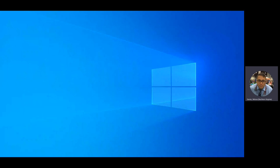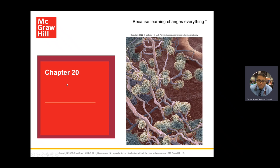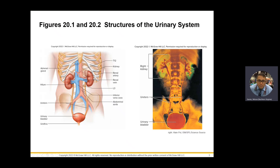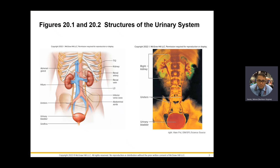All right, everybody — one more hour and then we can have a little early break. So what are we doing? Urinary system. The urinary system is composed of your kidneys, ureters, urinary bladder, and urethra — so it's this picture. Just like the brain, the kidney is the star.